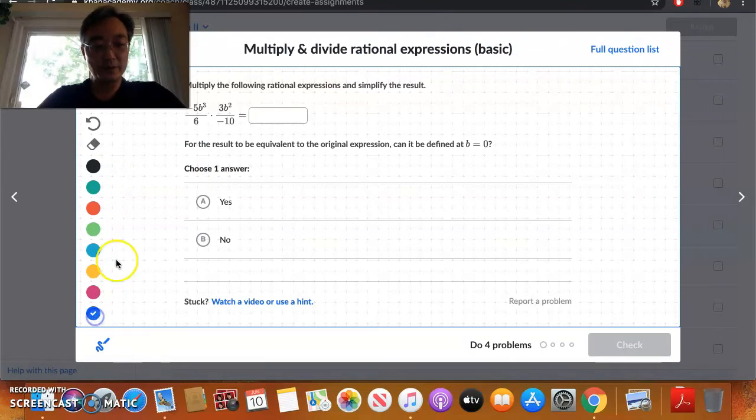So first thing we need to do is see what steps must be taken in order to simplify this rational expression. The first step is to factor completely, right? Factor completely and make sure every term has been factored completely and then second is we can apply cross-canceling.